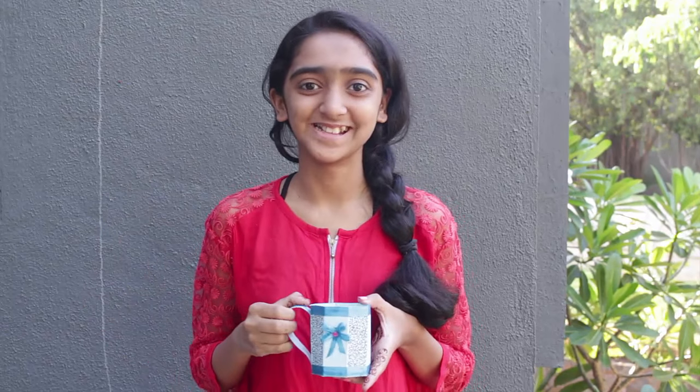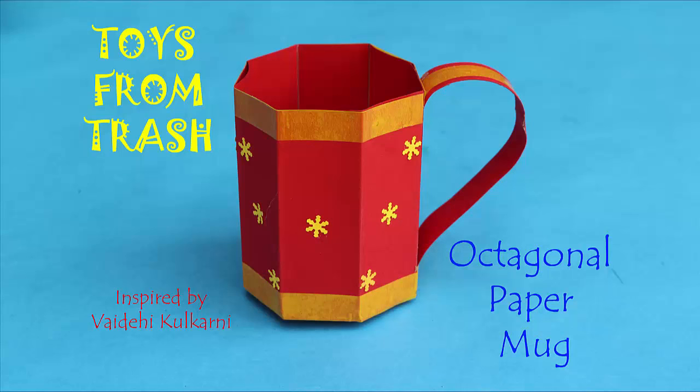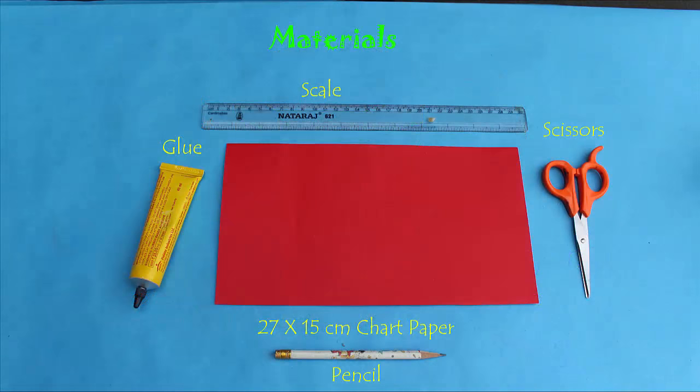Hi dear friends, today we are going to make this octagonal mug through chart paper. Just make sure you don't pour coffee in it. For this, you will require a chart paper of 27 centimeter by 15 centimeter.